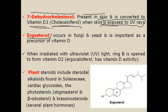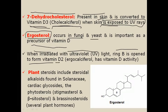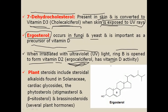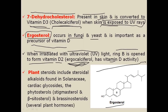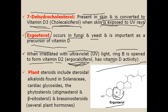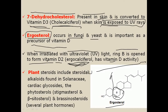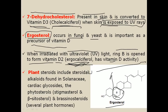Ergosterol is an important type of steroid present in fungi and yeast, and is important as a precursor of vitamin D. When ergosterol is irradiated with UV light, the ring B structure present in ergosterol forms vitamin D2, known as ergocalciferol, which has vitamin D activity. When ergosterol is irradiated with UV rays, ring B opens and reforms as ergocalciferol.